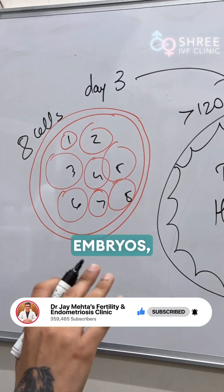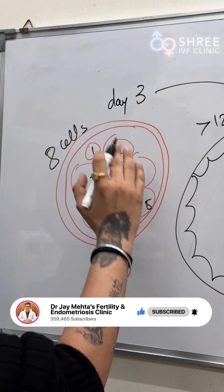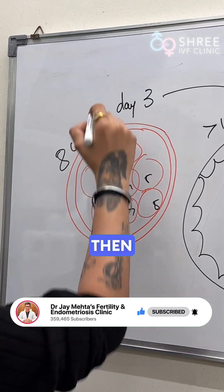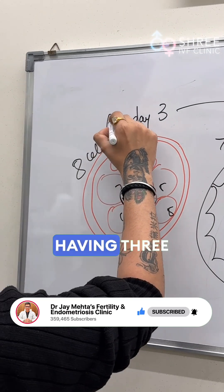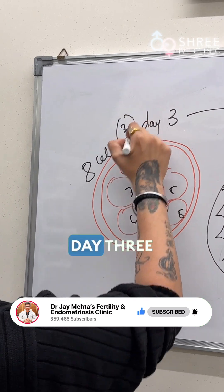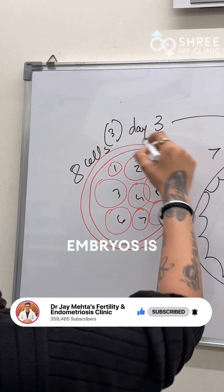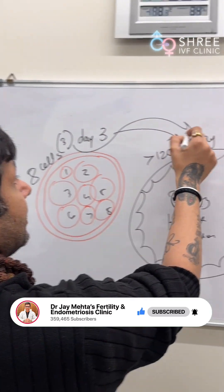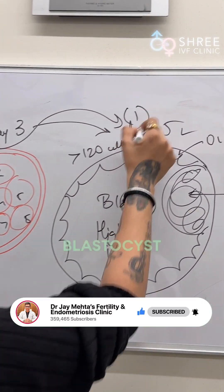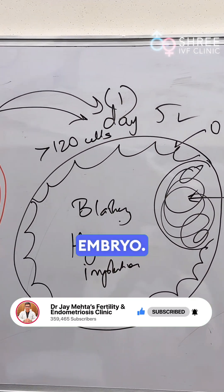But if you have made only day 3 embryos, if you have day 3 embryos in the freeze, then remember: having 3 day 3 embryos is equivalent to having 1 blastocyst embryo.